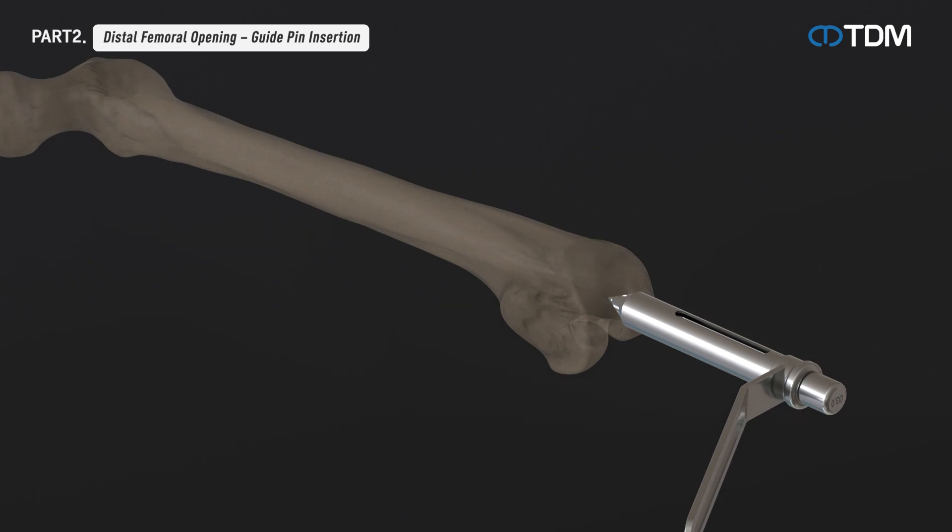Remove the trocar and insert the guide pin combined with the electric drill or guide pin holder into the appropriate location. Remove the drill sleeve and insert the open reamer along the guide pin to drill until the head of the reamer reaches the proper position, then remove the open reamer and guide pin in turn.